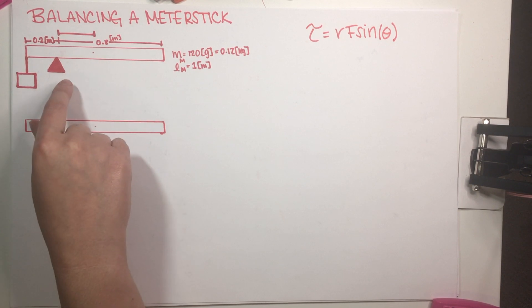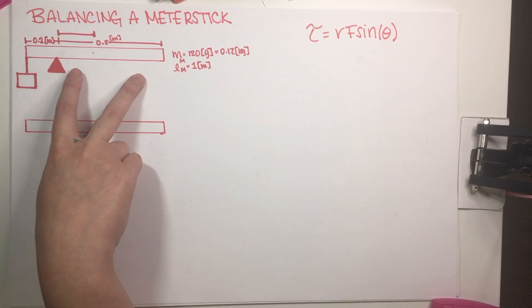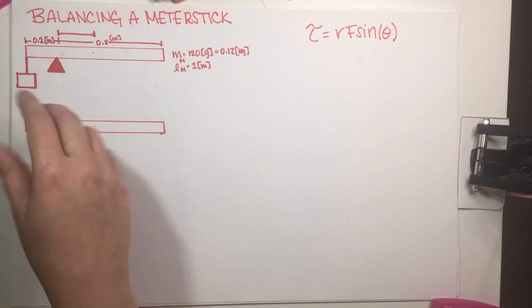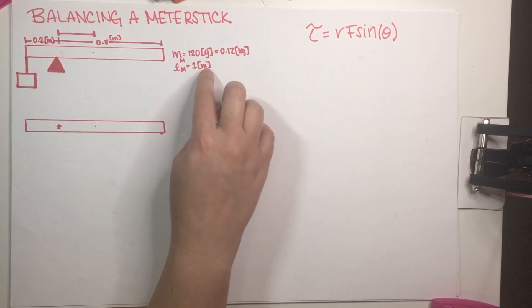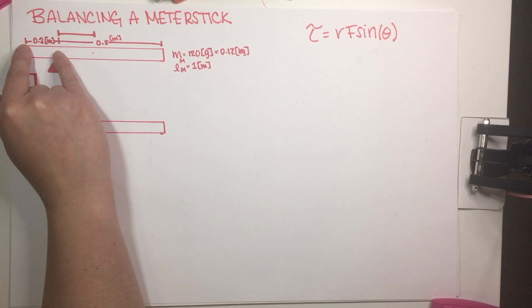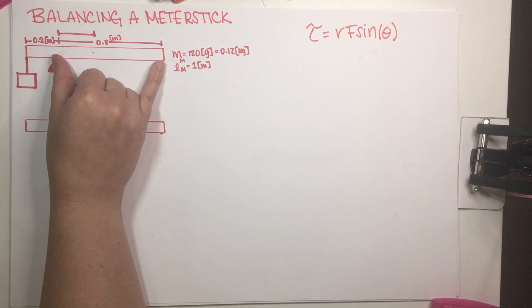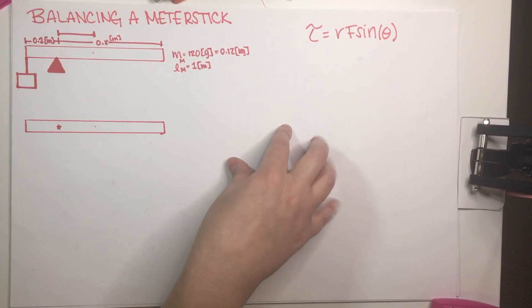And a meter stick is basically a ruler that measures exactly one meter. So the length of a meter stick is one meter. And that is how I was able to figure out that if this is 0.2 meters, then this distance has to be equal to 0.8 meters. And that is basically all that I've done up to this point.